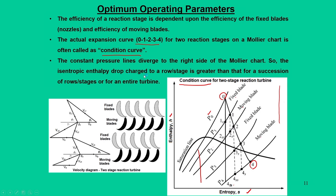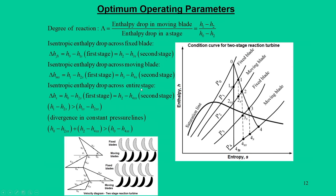After calculating the work output, we find the optimum blade speed at which the reaction turbine should operate. Since we have assumed 50 percent reaction, the blades need to be geometrically similar, for which theta should equal gamma. From this we derive the expressions for rate of work or power, and for maximum work we differentiate the work expression with respect to Vb to get the optimum blade velocity. The optimum blade velocity is Vs1 cos theta, whereas in other cases it was Vs1 cos theta / 2 — meaning in a reaction turbine we operate at a higher blade speed.